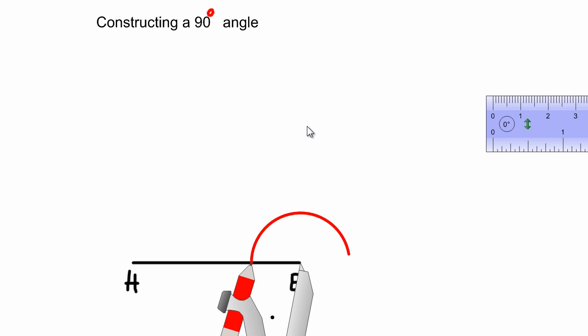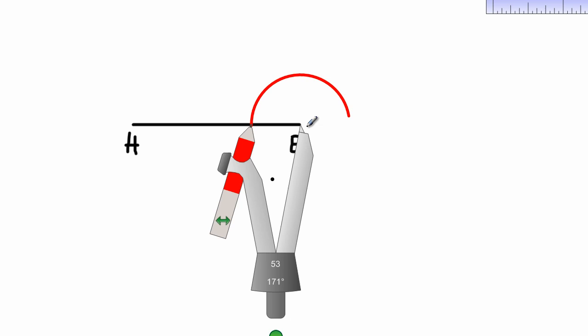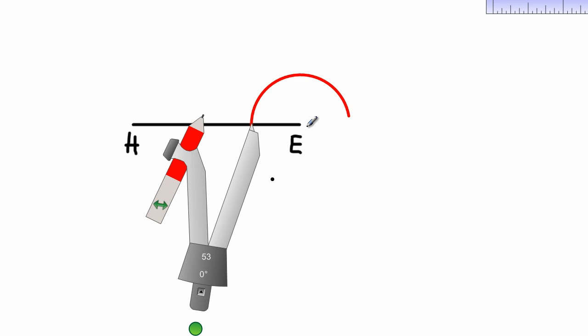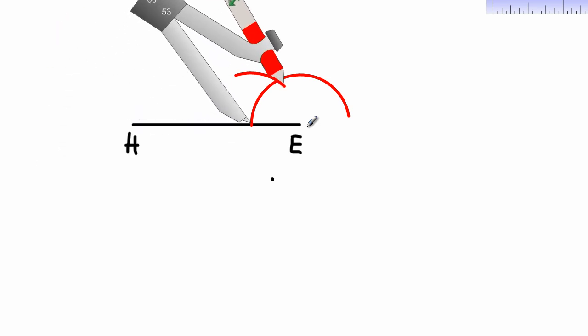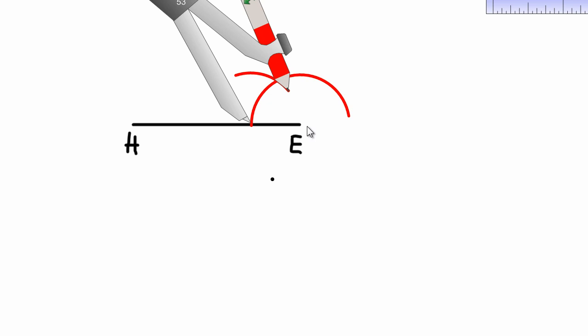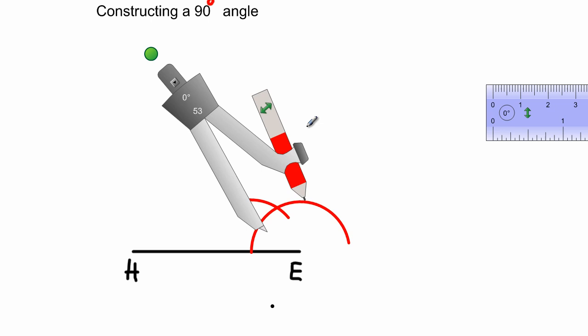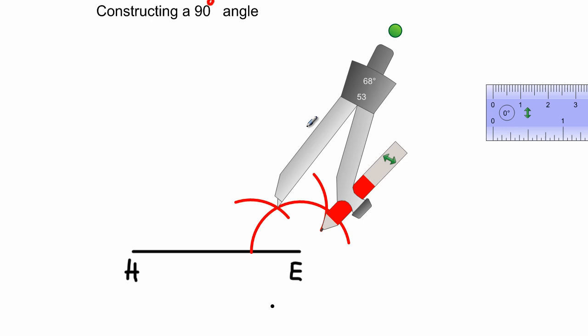Since I've swung an arc that cuts the line segment HE, I'm going to take my compass and swing an arc here. From previous lessons you would have already known that would be a 60 degree. If I should take my compass and place it here again, this angle that I'm now cutting will be a 120 degree.